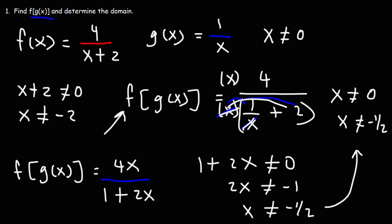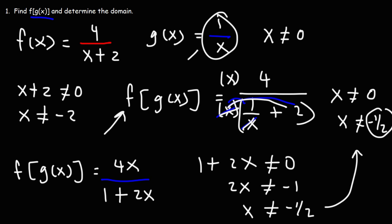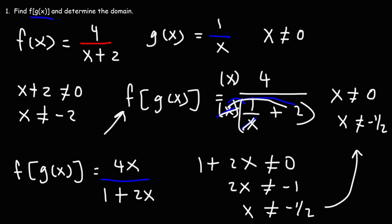This makes sense — we can't have negative 2 in f, and an x value of negative 1 half will make g equal negative 2, which invalidates f. That's why we have this restriction in the composite function — x equals negative 1 half produces a g value of negative 2 that makes the denominator of f undefined.